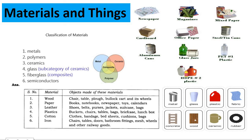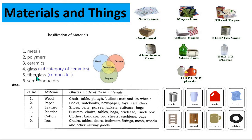Hello everyone. Chapter 5 - Materials and Things in Our Daily Life. We use so many products which are made up of materials of different types. Based on the material used, materials are classified into metals, polymers, ceramics, glass, fiberglass, and semiconductors. These can be used singly or in combination — for example, metal can be combined with ceramics or polymers to form a different product, and a combination of three gives a composite from which fiberglass can be prepared.